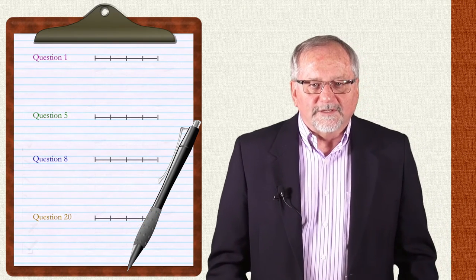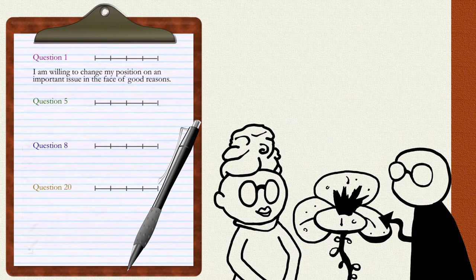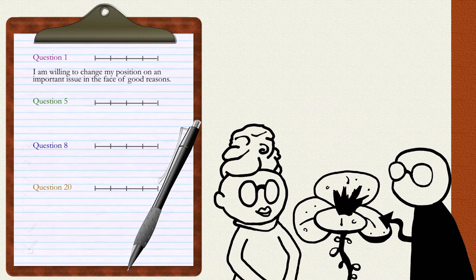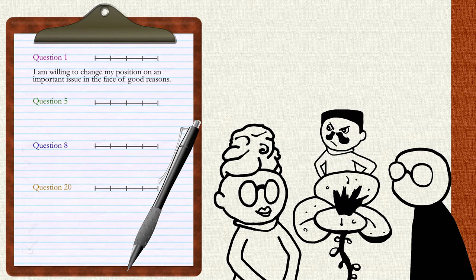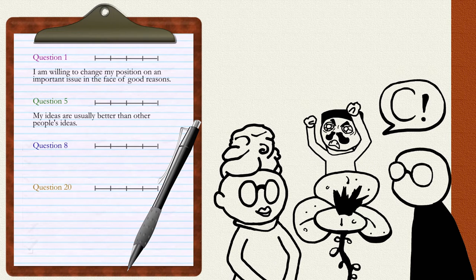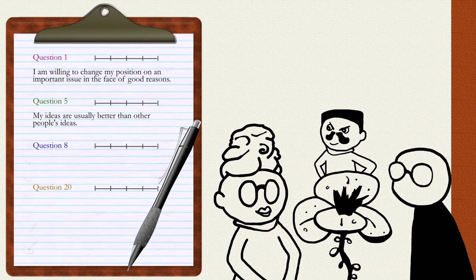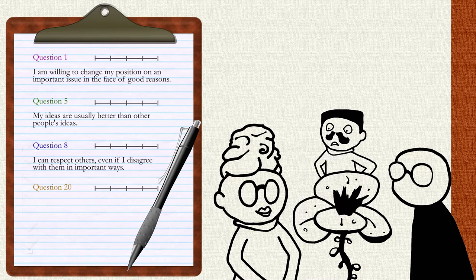Let me give some example items. The first is an example of openness to revising one's viewpoint: I am willing to change my position on an important issue in the face of good reasons. The second is reverse scored, dealing with lack of intellectual overconfidence: My ideas are usually better than other people's ideas. A third gets at the respect for others factor: I can respect others even if I disagree with them in important ways.